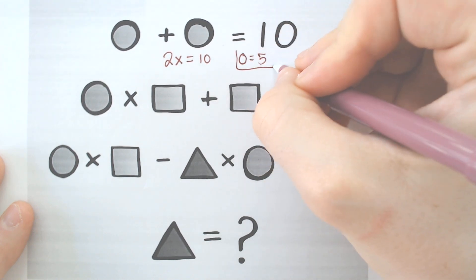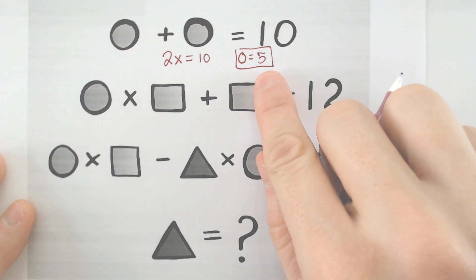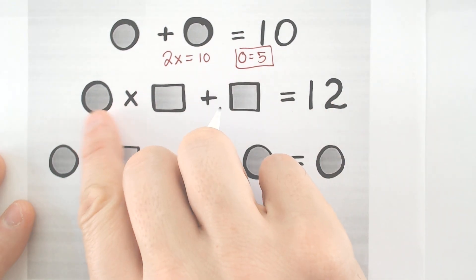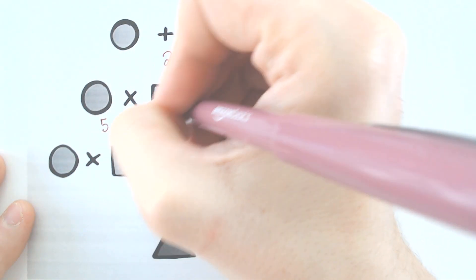Okay, I don't want to do a circle because it looks like 0. So now that the circle is 5, we can substitute this in, and this is where most people are going to make a mistake. Because 5 times a square, which I will call y, plus another square.